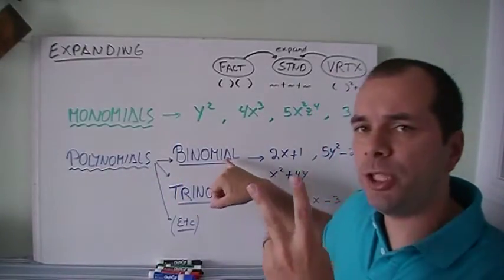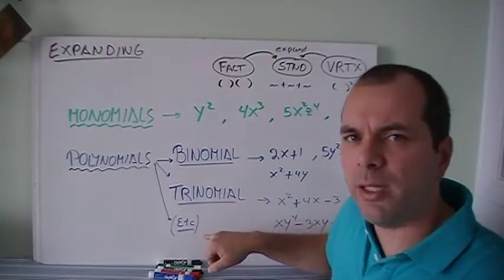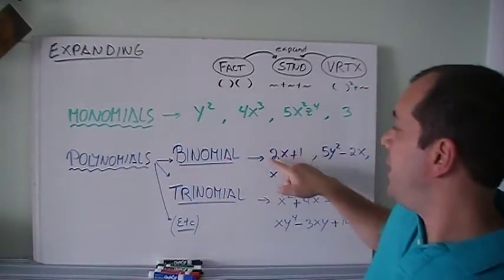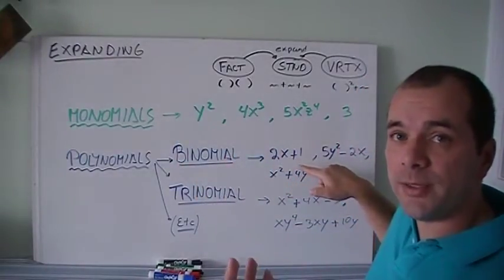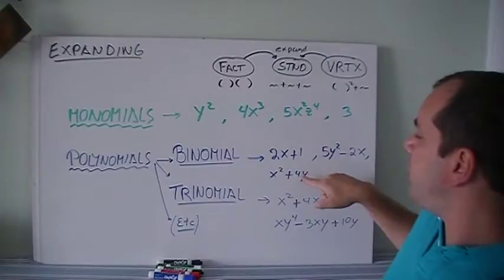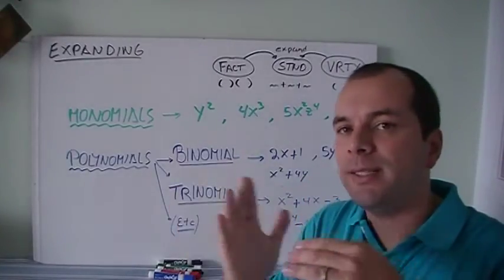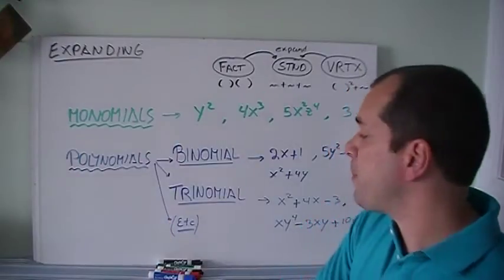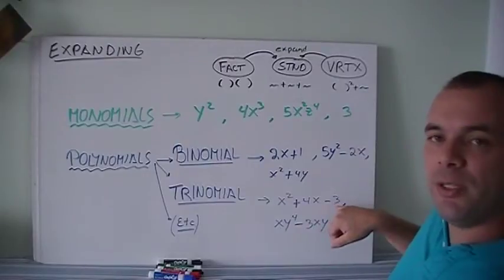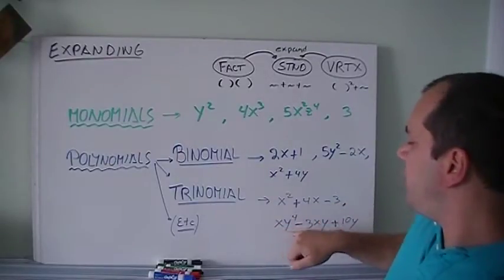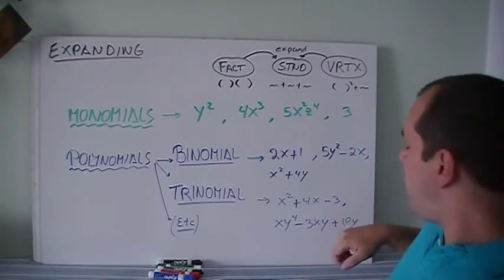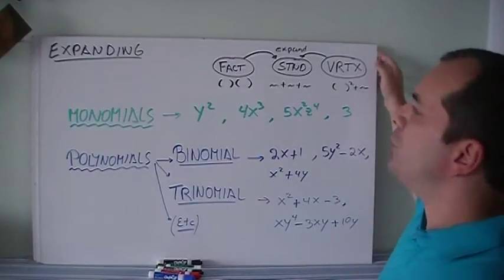And polynomials, we got binomials—two terms. Trinomials—three terms. And then it's etcetera. Really, only the two first ones are important. So binomial has two terms. We see that it got 2x plus 1. There's two terms, the 2x and the 1. 5y squared minus 2x, again, two terms. And x squared plus 4y. We see that the plus separates the expression into two, and those are two terms. Similar for trinomials, we got x squared plus 4x minus 3. The plus and the minus divide into three spots. It could get more complicated, but x times y to the power of 4 minus 3xy plus 10y are all trinomials.